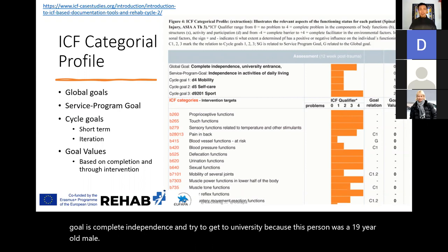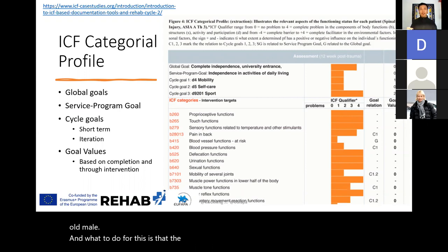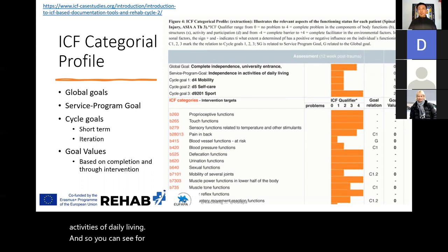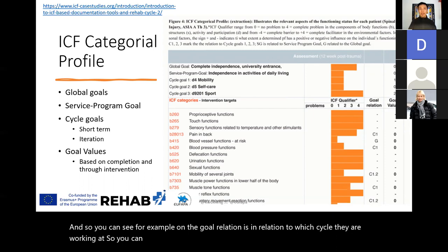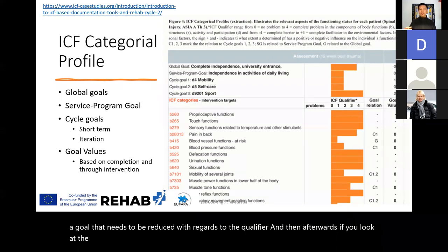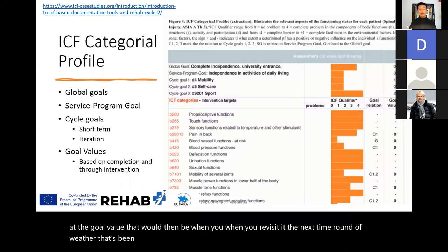At the service level, the aim is to make them independent in activities of daily living. You can see the goal relation corresponds to which cycle they are working at — for example, pain in the back relates to mobility, which is a goal to be reduced with regard to the qualifier. The goal value is then reviewed at the next visit to determine whether it's been completed through the intervention.